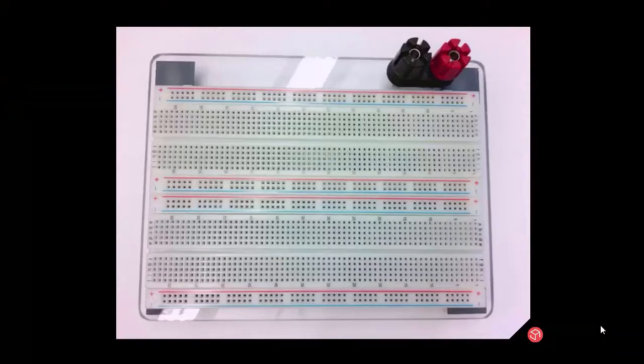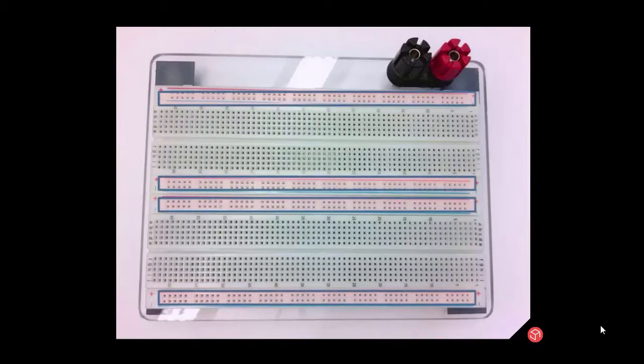If you look at the breadboard, you see lots of pinholes organized in sets of fives. Let us first distinguish two different types of sections: the power section and the component section. There are four power sections, also known as power rails.